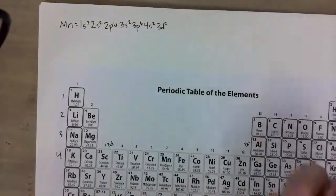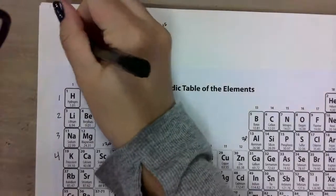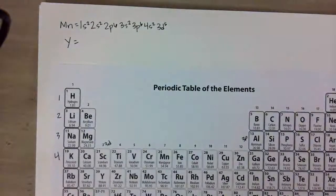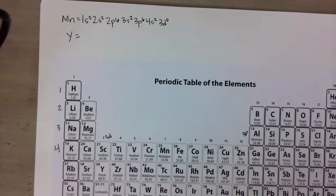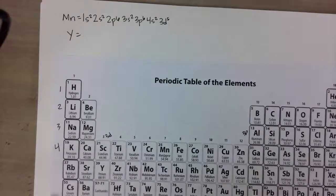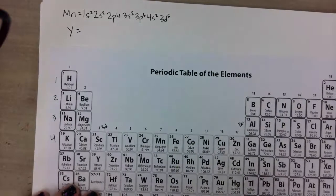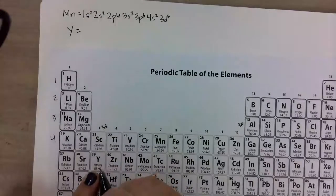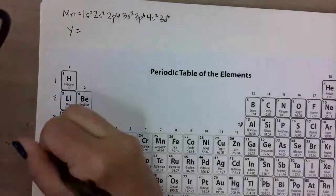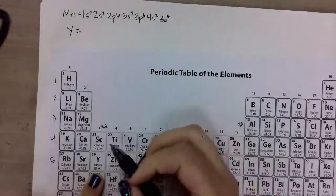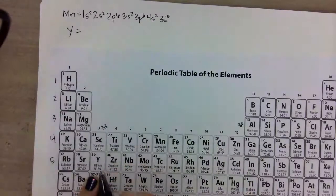One more example I'd like you to try, and then I'm going to show you a shortcut. The next example is yttrium, Y — it's element number 39. Pause your video and give yttrium a try for its electron configuration.